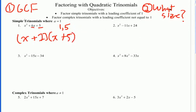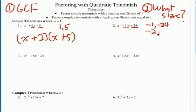Number two: look for a GCF — there is none. It's a trinomial, and it's a simple trinomial. I want to figure out what two factors multiply to positive 24 and add to negative 11. They multiply to be positive, so they've got to be the same sign. But since B is negative, both must be negative. If you can't figure out the factors immediately, start to make a list. Negative 1 and negative 24 — does that add to negative 11? No. Negative 2 and negative 12? No. How about negative 3 and negative 8? Does that add to negative 11? Yes. So this factors into (x − 3)(x − 8).